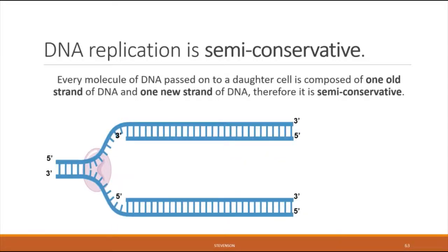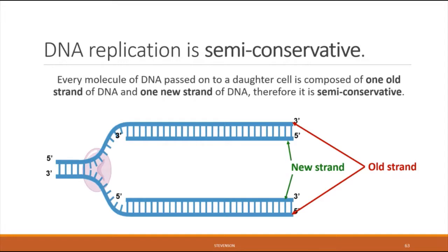One final concept related to DNA replication is that the process is semi-conservative. The word conserve means to save or preserve — water conservation means to save water. Semi-conservative refers to the fact that every new double-stranded piece of DNA that a cell passes on to a daughter cell is made of two strands: one of which is actually the old DNA, and the other of which is the new DNA built based upon the sequence of the old strand as a template.